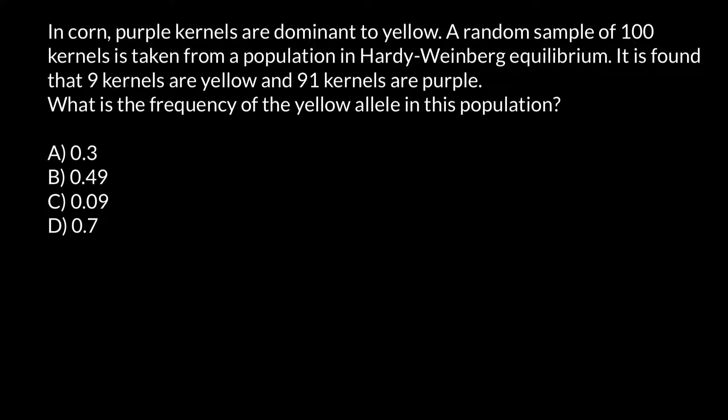Hello and welcome to Nikolai's genetics lessons. Today's problem is: in corn, purple kernels are dominant to yellow. A random sample of 100 kernels is taken from a population in Hardy-Weinberg equilibrium. It is found that 9 kernels are yellow and 91 kernels are purple.